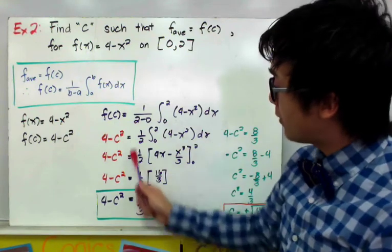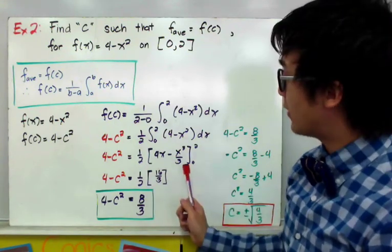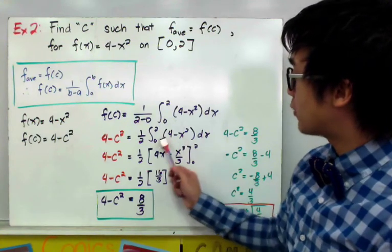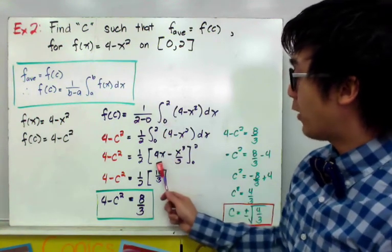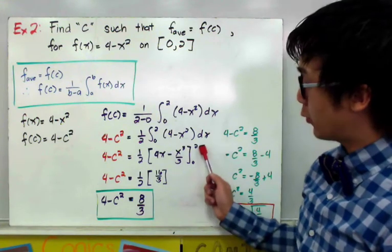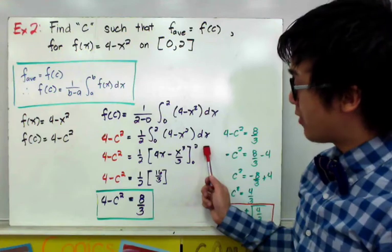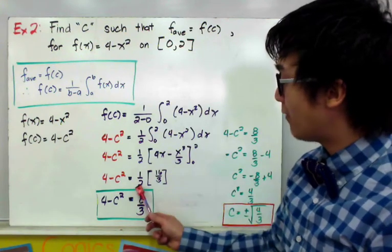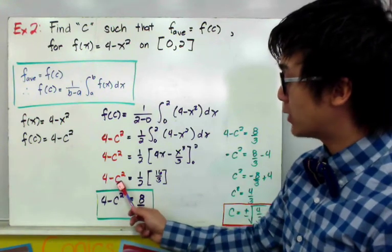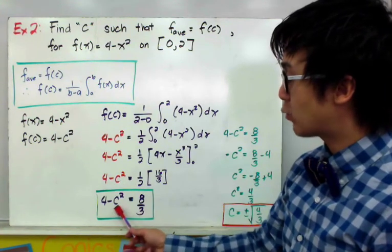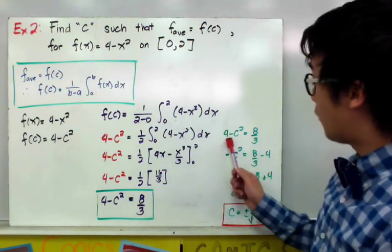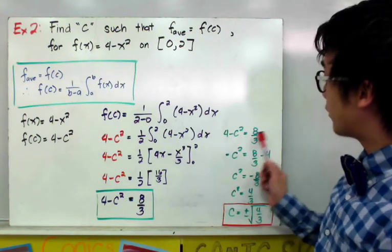Let's simplify the right side of the equation by performing definite integration. The definite integral of 4 minus x squared dx from 0 to 2 will be 4x minus x cubed over 3 from 0 to 2. Evaluating it further, our function will now be 1 half times 16 over 3 equal to 4 minus c squared, which gives us 4 minus c squared equal to 8 over 3.